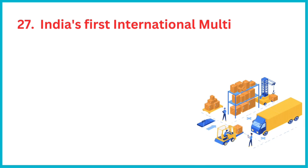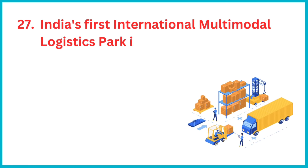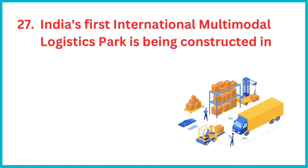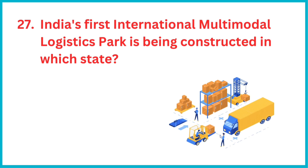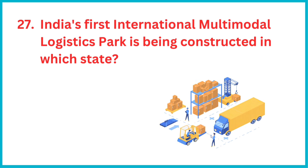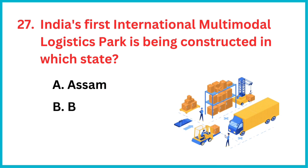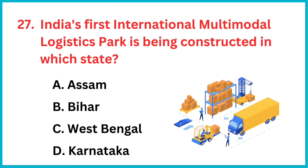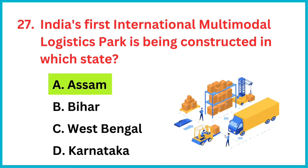India's first International Multimodal Logistics Park is being constructed in which state? The correct answer is option A: Jogighopa in Assam.